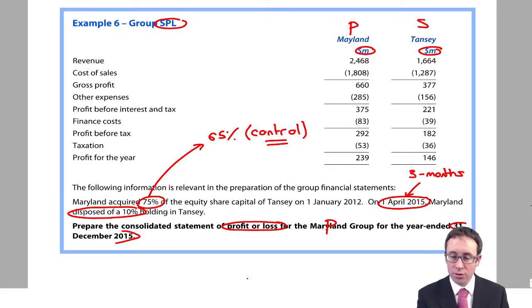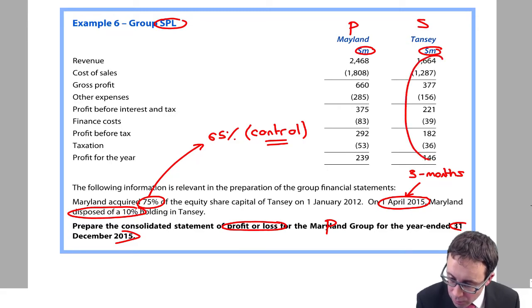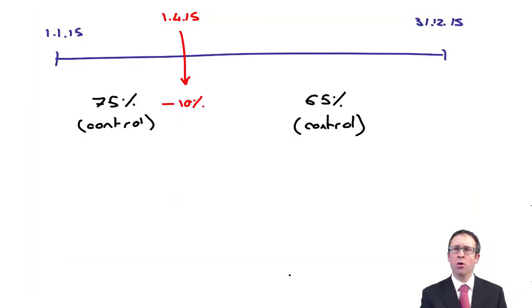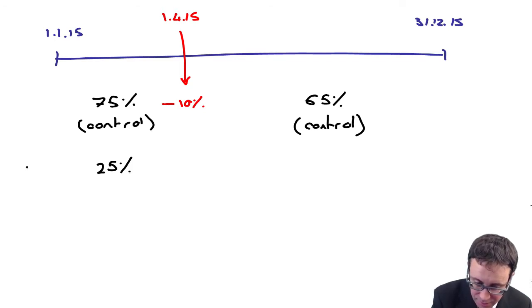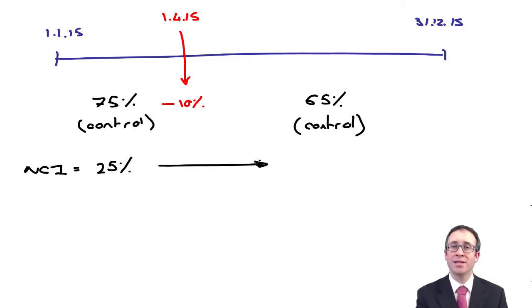So we're still going to consolidate for the full 12 months. So when we go through there and look at Tansy's results, we are going to include all of Tansy's results. 100% line by line. Why? Because we have had control for the full 12 months. The issue that we have here is that we had a 25% non-controlling interest. And if we've disposed of 10% of the shares, that means that we've disposed of 10% and given it to the non-controlling interest. So the non-controlling interest now owns 35%.